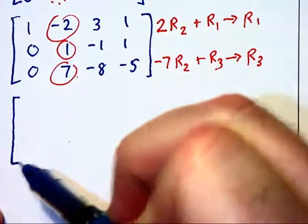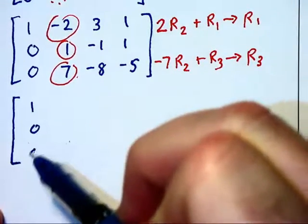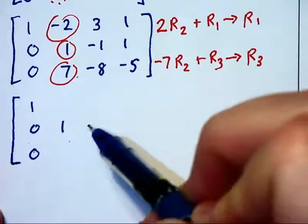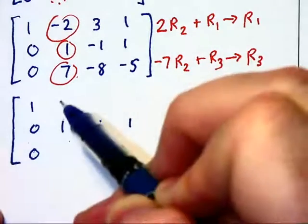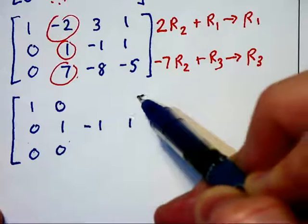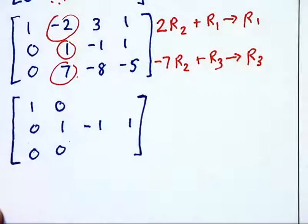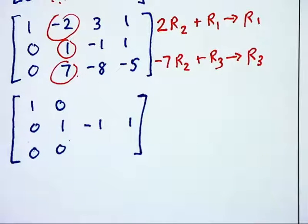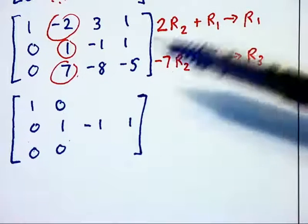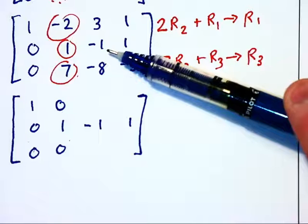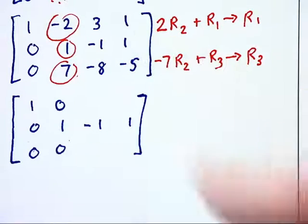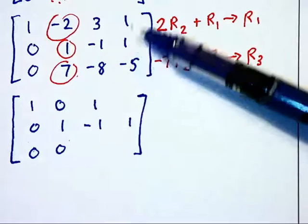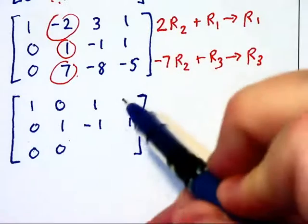So when I rewrite my matrix here, I'm going to keep row 2 exactly as it is. We've designed this to get zeros in that second column, so I'm just going to write them in automatically. And let's focus on these third and fourth columns. So here we go. 2 times this -1 is -2, plus the 3 above it is 1. 2 times 1 is 2, plus the 1 above it makes 3.